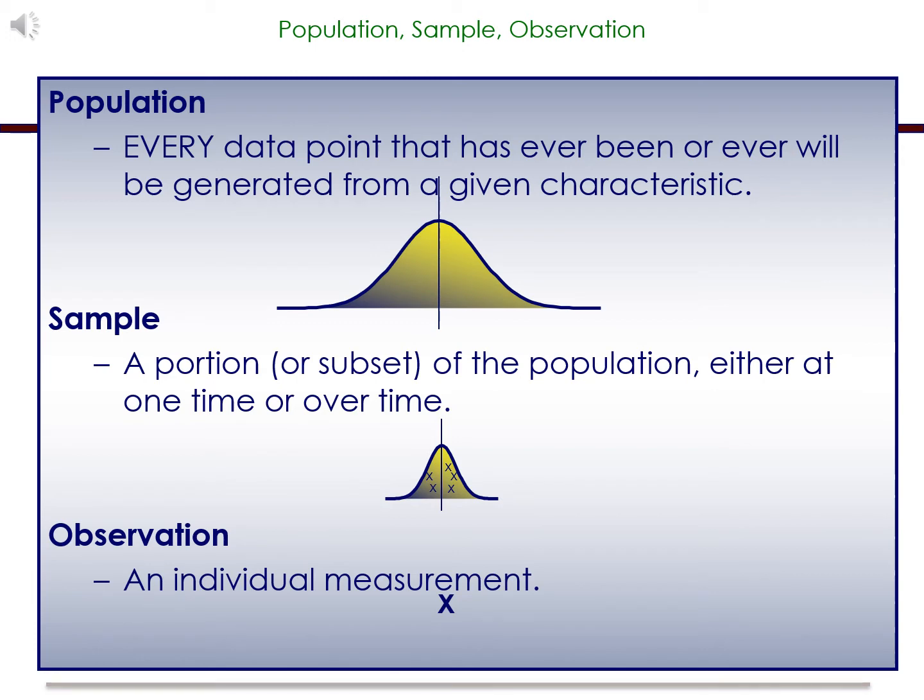A population is every data point that has ever been or ever will be generated from a given characteristic. A sample is a portion or subset of said population, either at one time or over a period of time. And finally, an observation is an individual measurement taken from a sample and/or the population.